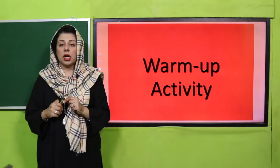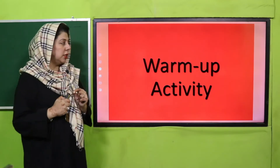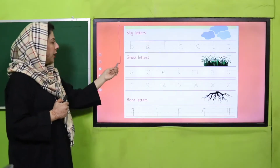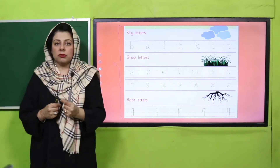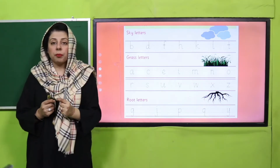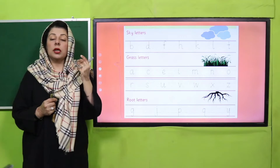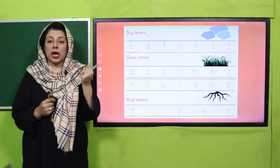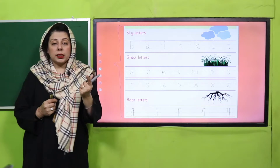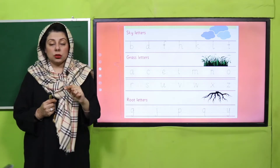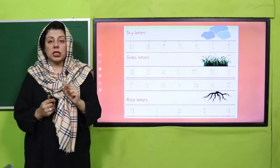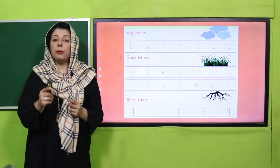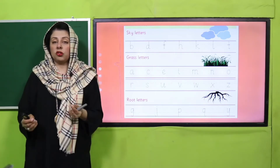We are going to start with a warm-up activity. In this warm-up we will recall the letters we have already learned. There were three ways in which letters are written — they are known as sky letters, grass letters, and root letters. Let's do a little revision together and then teachers will ask students to write on the board, sandbox, floor, or any available medium.